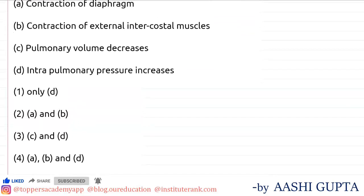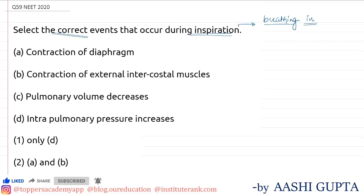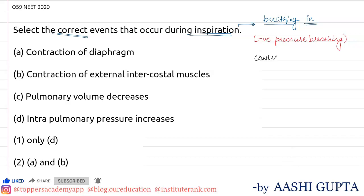Let's see the process of inspiration. In humans, negative pressure breathing occurs. Inspiration occurs via the contraction of two muscles: the first is the phrenic muscle and the other is the external intercostal muscles. Contraction of these two muscles leads to inspiration.